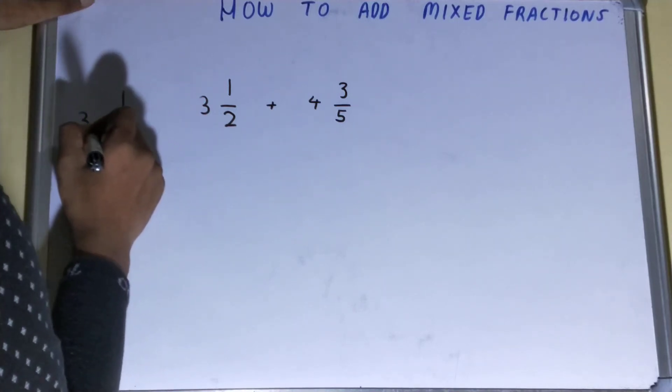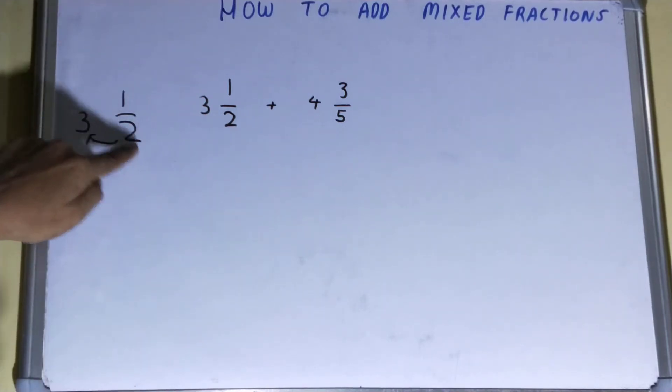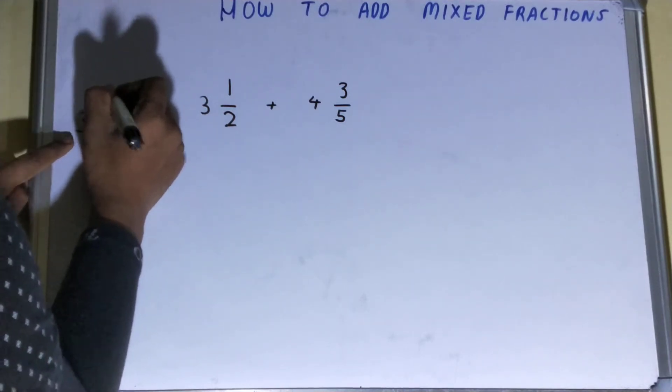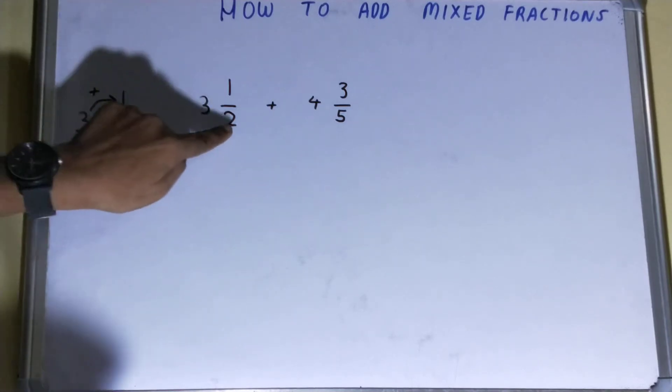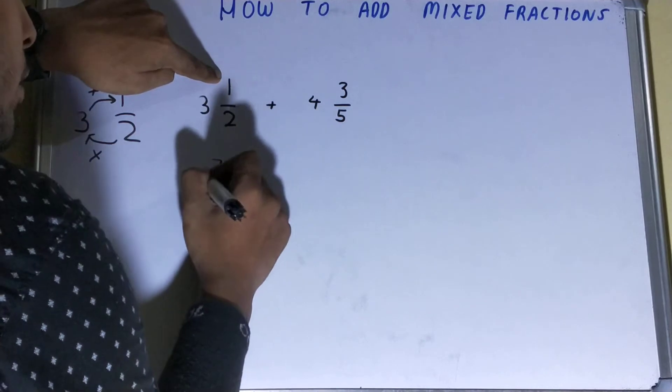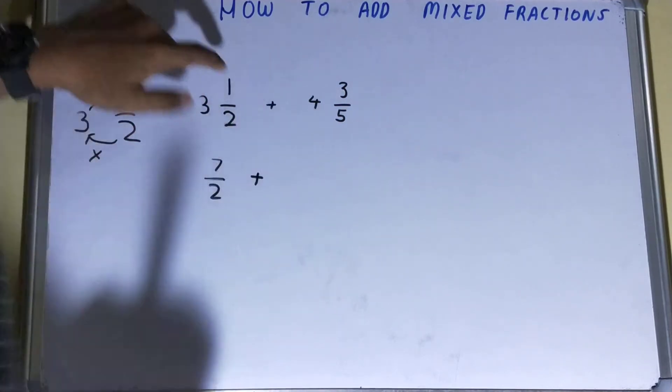So you need to multiply these two values - that is the denominator with this whole - multiply and then you need to add this. Okay, do remember this. So it will be 2 times 3, that's 6 plus 1 equals 7, so it will be 7 by 2. Okay, now let's see for this.